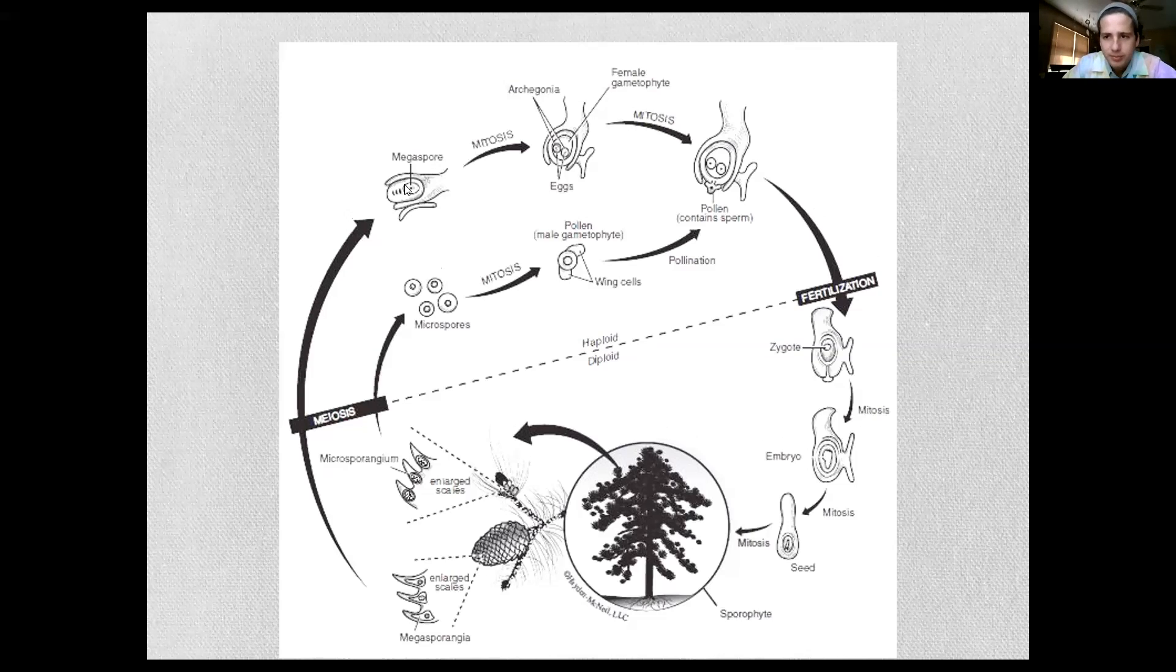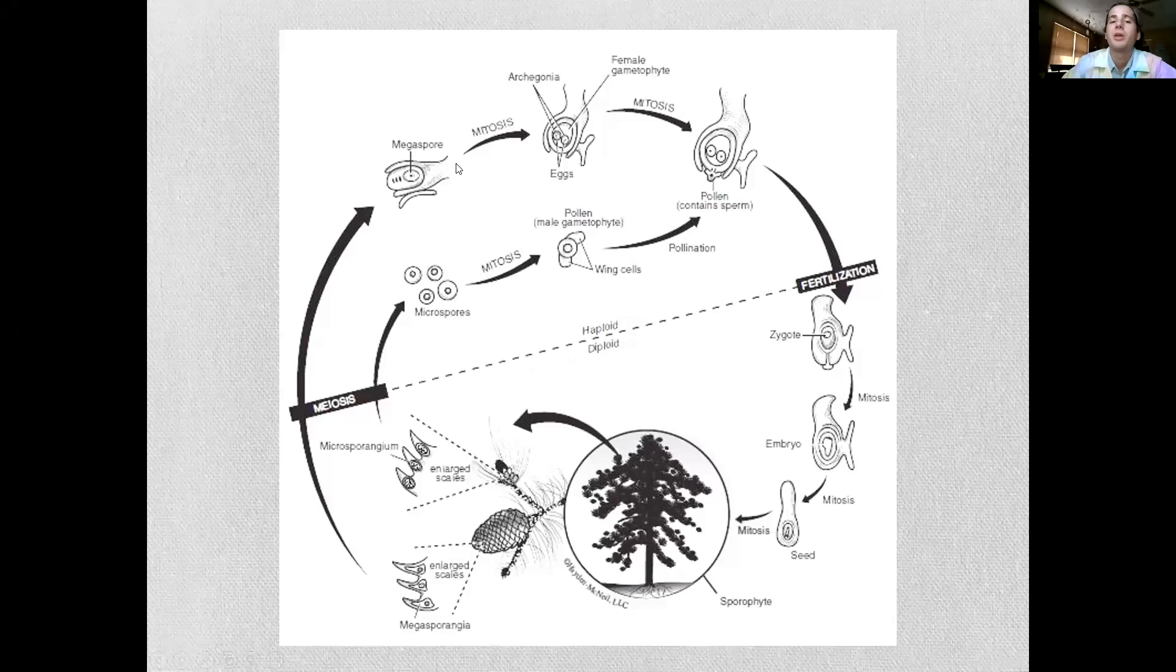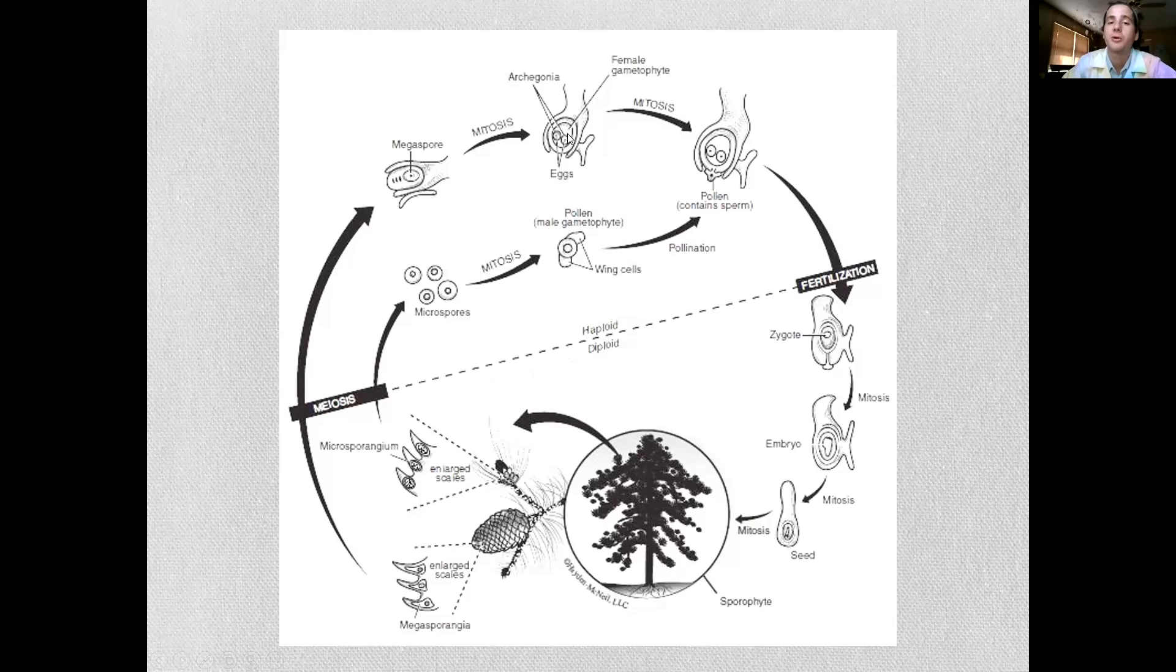Whenever you see the word spore, think haploid. So they undergo mitosis: megaspores produce archegonia and then eggs inside of those. Microspores undergo mitosis to produce wing cells, so little tiny Dumbo ears that they will use to float away on the breeze.